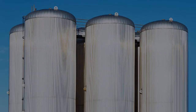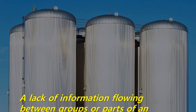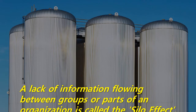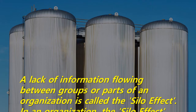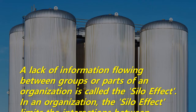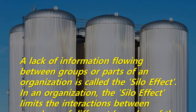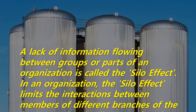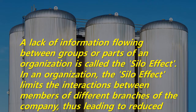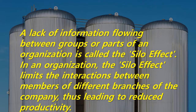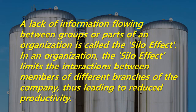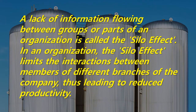A lack of information flowing between groups or parts of an organization is called the silo effect. In an organization, the silo effect limits the interactions between members of different branches of the company, thus leading to reduced productivity.